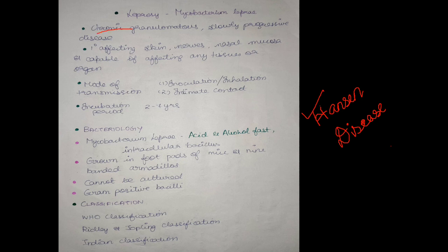It is a chronic granulomatous and very slow progressive disease. Primarily it will affect the skin and peripheral nerves as well as other organs. Transmission occurs mainly through inhalation, and recently intimate contact spread. The incubation period is very long, about 2 to 7 years, making diagnosis difficult.